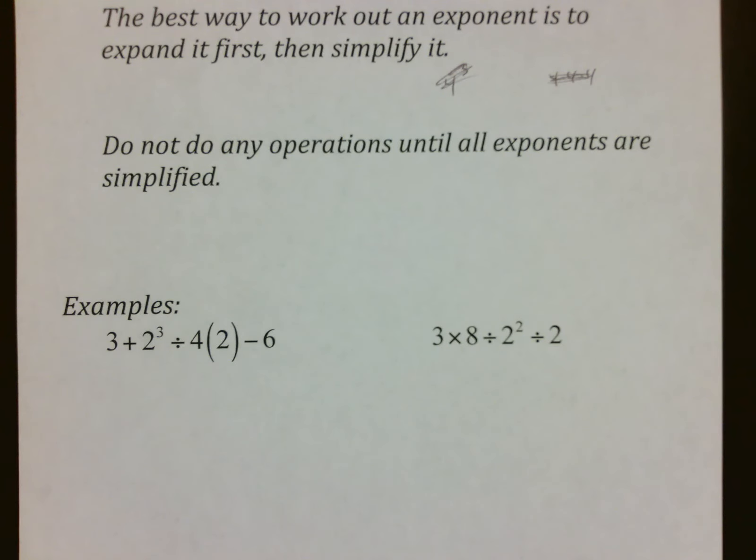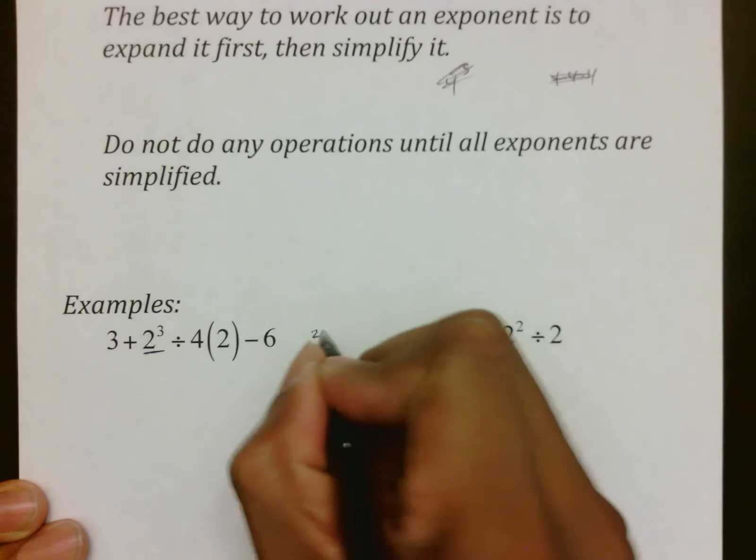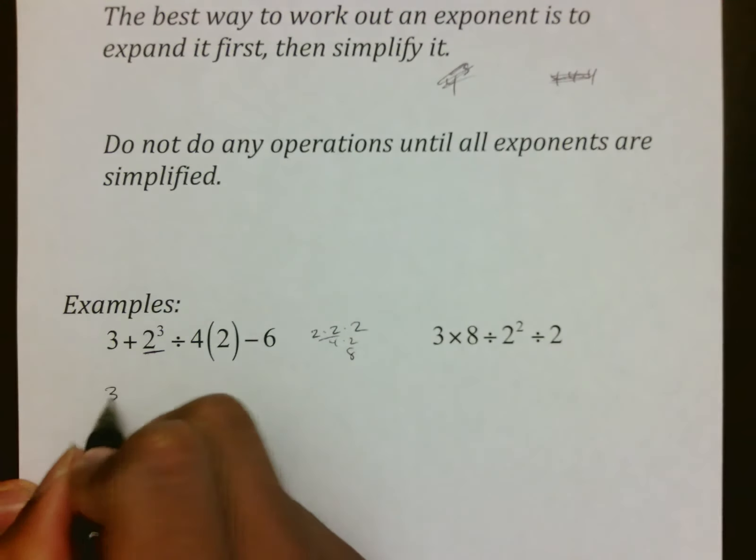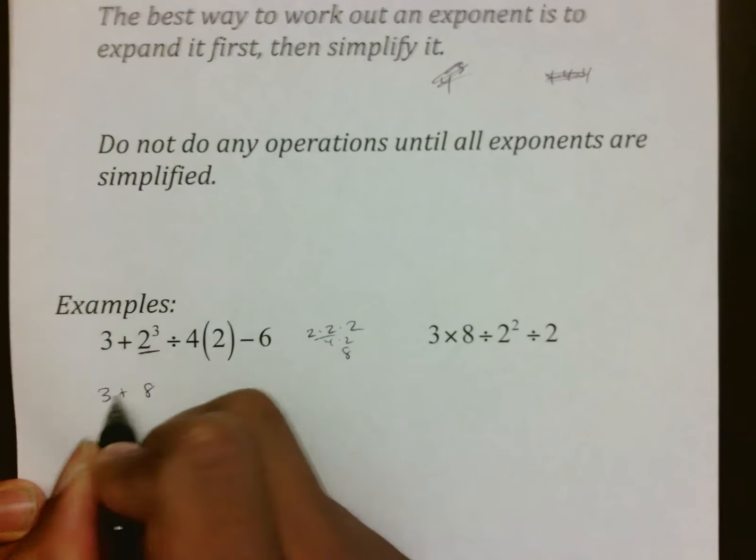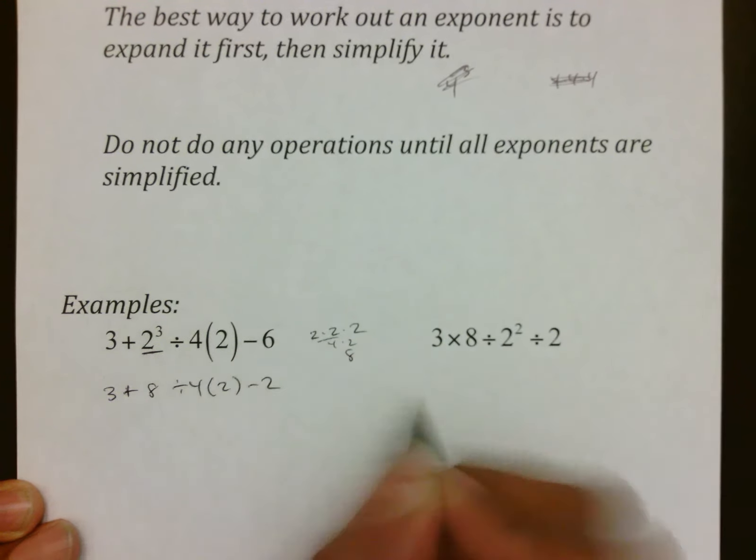In terms of your examples, I think common sense pays off here. When you look at this, the first thing I notice is that there's a little three here that needs to be dealt with before I can do anything. And so what I'm going to do is go off to the side, expand my 2³. That is 2 × 2 × 2, which is 8, and then rewrite everything else: 3 + 8 ÷ 4(2) - 6.